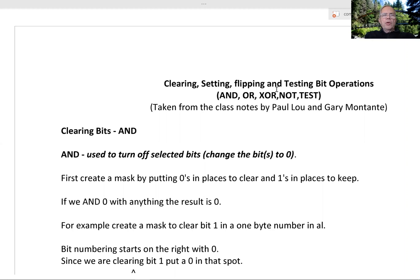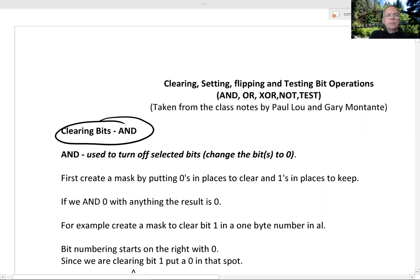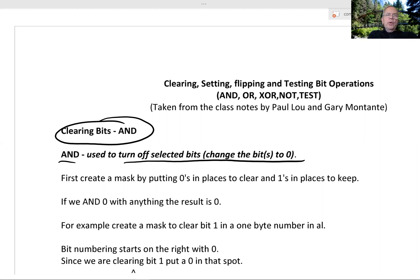I'm going to start off by talking about clearing bits by using AND. You can use AND to turn off selected bits. By clearing I mean you change the bit to zero. If it's already zero, it remains zero. If it's one, it becomes zero.